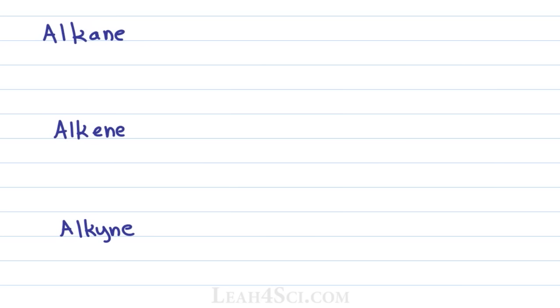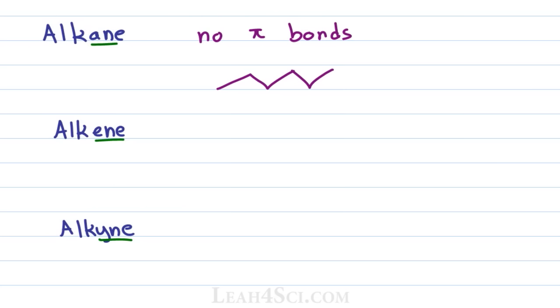Another thing to discuss before we go into functional groups are the types of carbon chains you're going to see: specifically the alkane, alkene, and alkyne. Notice the endings — alkane is A-N-E, alkene is E-N-E, alkyne is Y-N-E — and this tells you the number of carbon-to-carbon pi bonds. An alkane has no pi bonds between carbon atoms, meaning every carbon is single-bonded to another carbon. You'll see this drawn out in line structure as a zigzag where every carbon is sp3 hybridized with an ideal bond angle of 109.5 degrees.